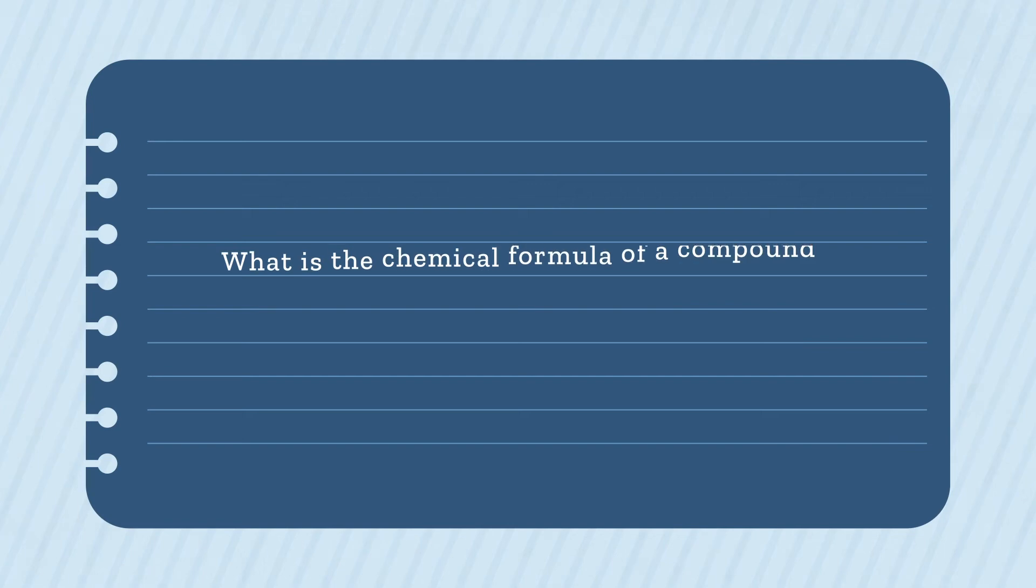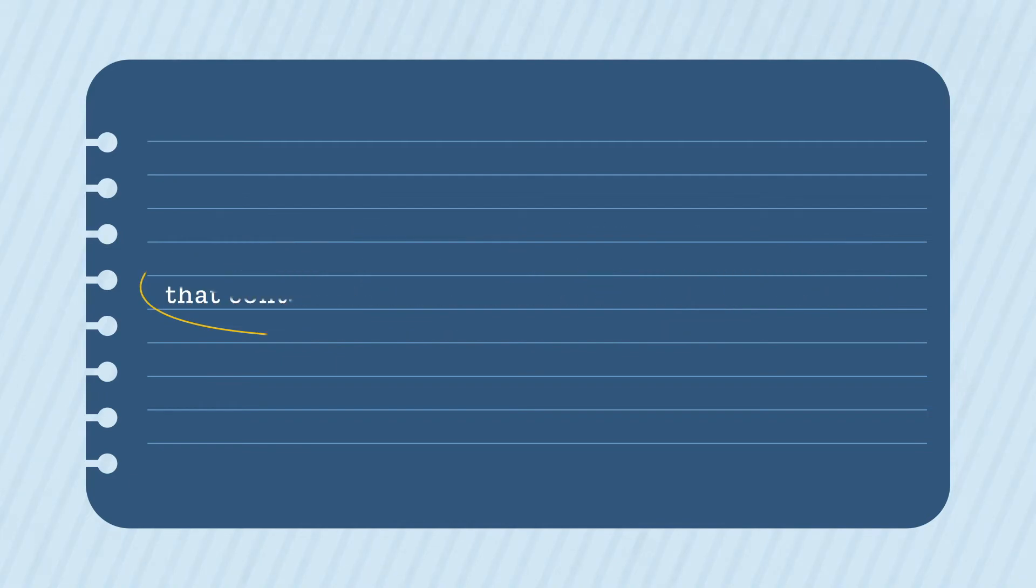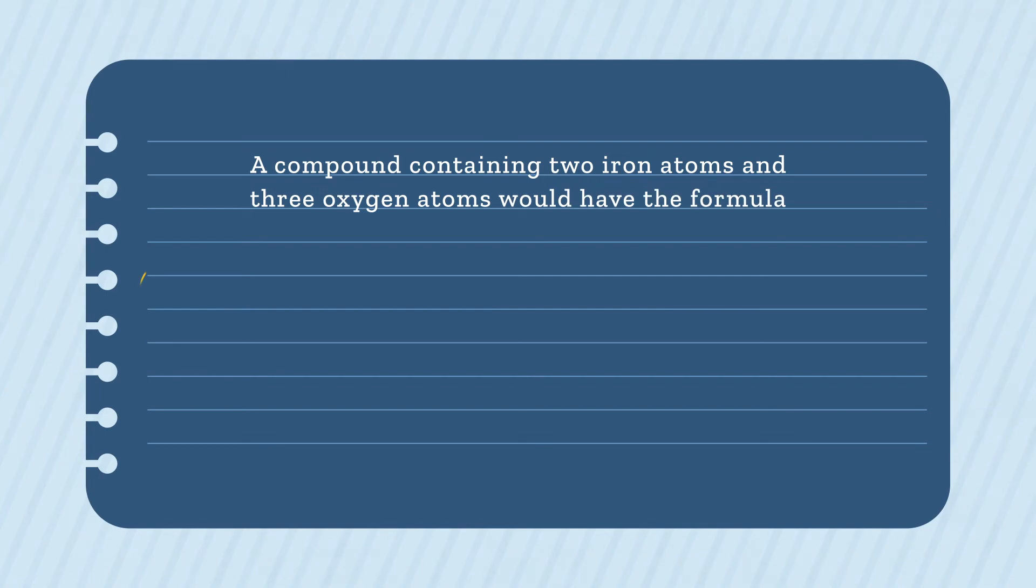What is the chemical formula of a compound that contains two iron atoms bonded to three oxygen atoms? A compound containing two iron atoms and three oxygen atoms would have the formula Fe2O3.